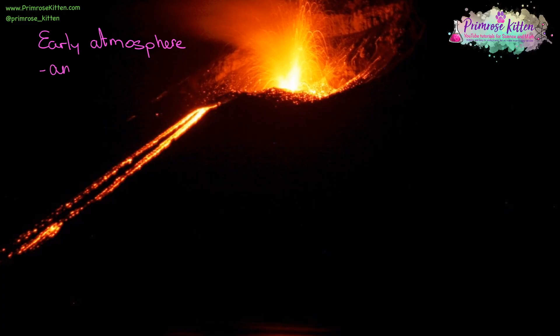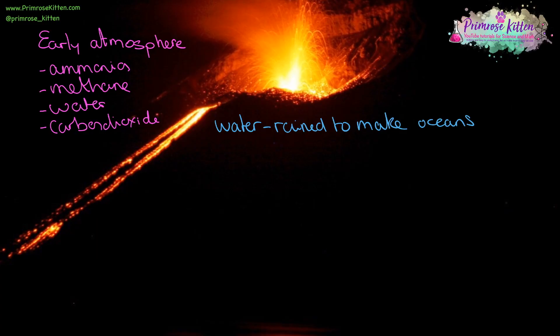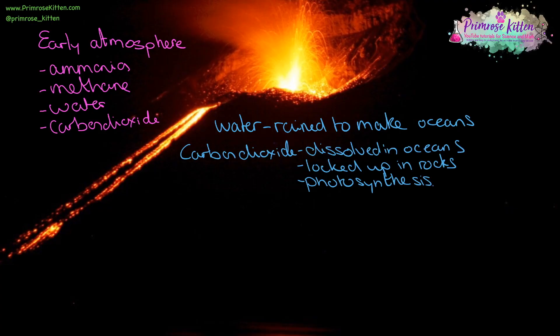The early atmosphere had a large amount of ammonia, methane, water vapor, and carbon dioxide — it would have been a pretty unpleasant place to be. Ammonia smells like hair dye or really old baby nappies, and methane smells like farts. The level of water vapor decreased as it rained, which made the oceans. Carbon dioxide levels decreased as it dissolved in the newly formed oceans, turned into fossils, became locked up in rocks, and photosynthesis started to take place.